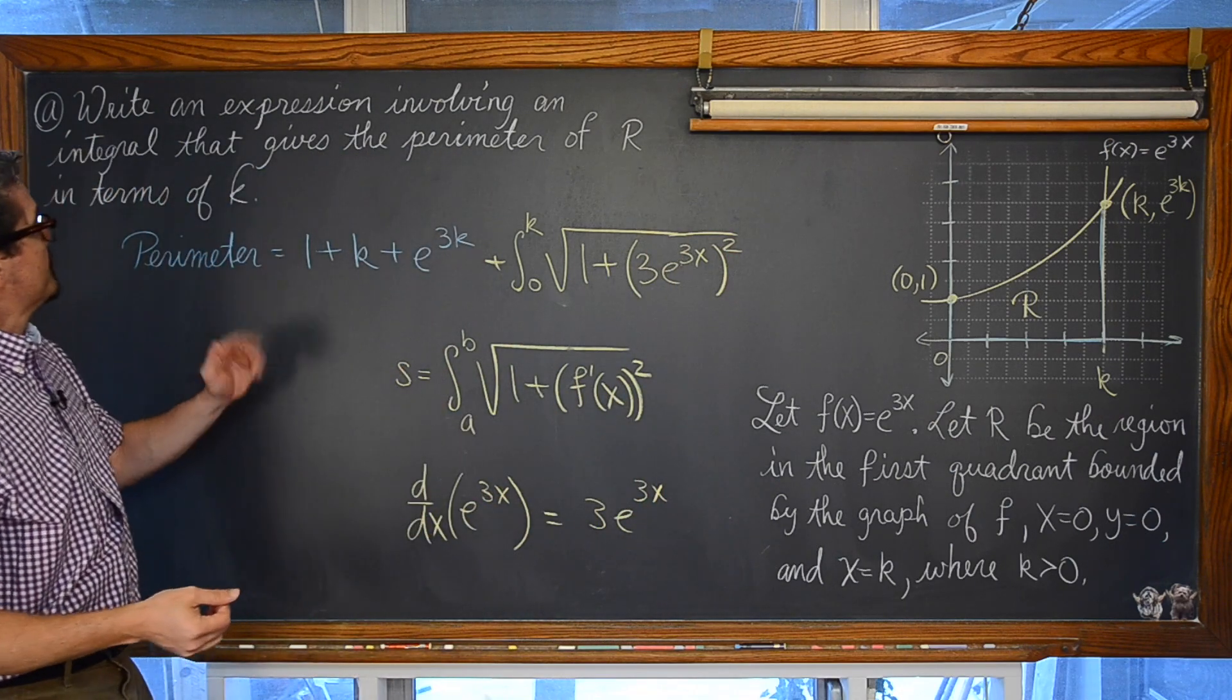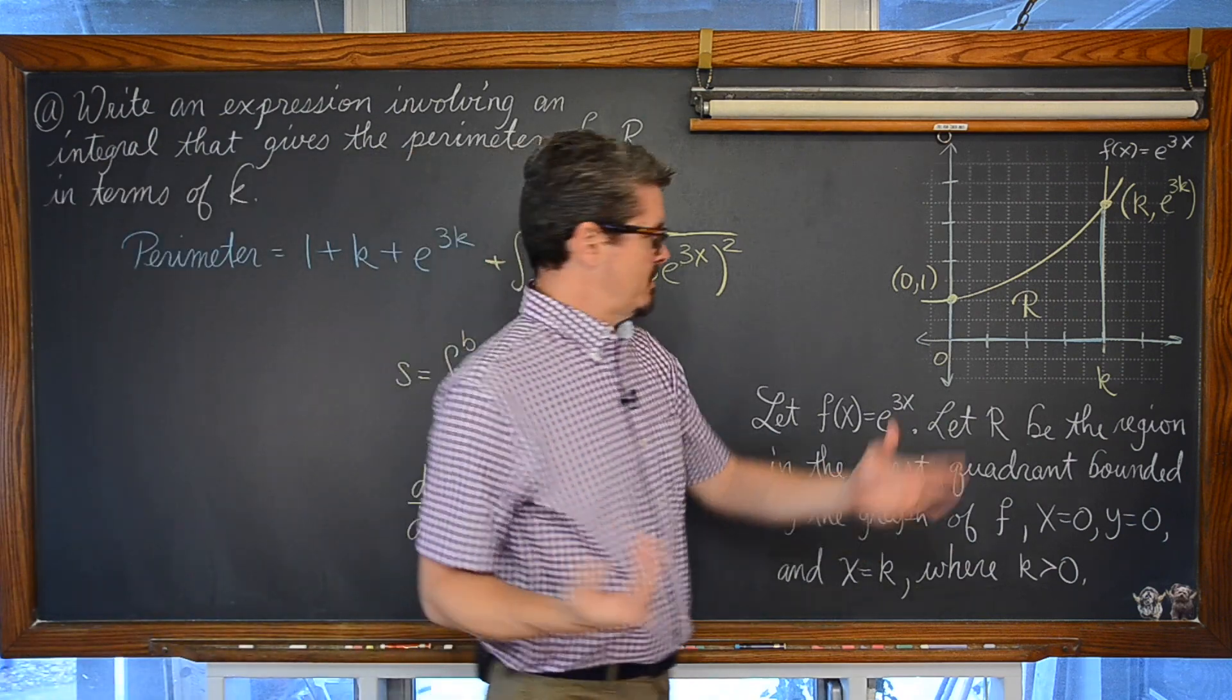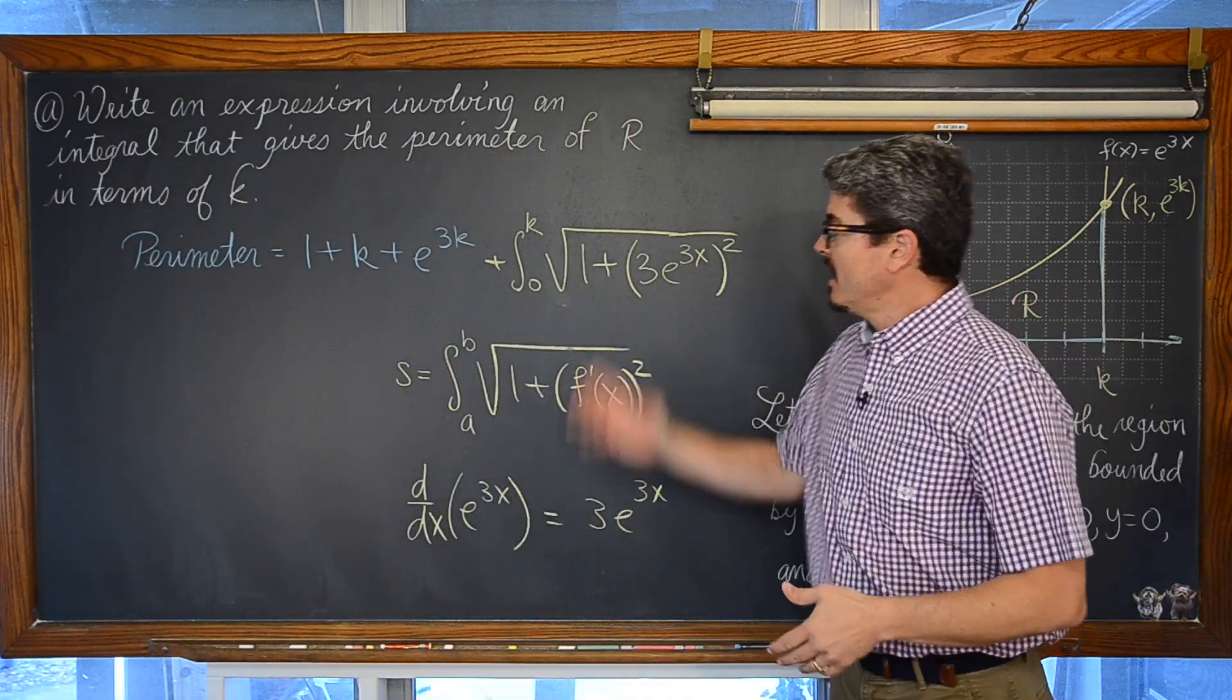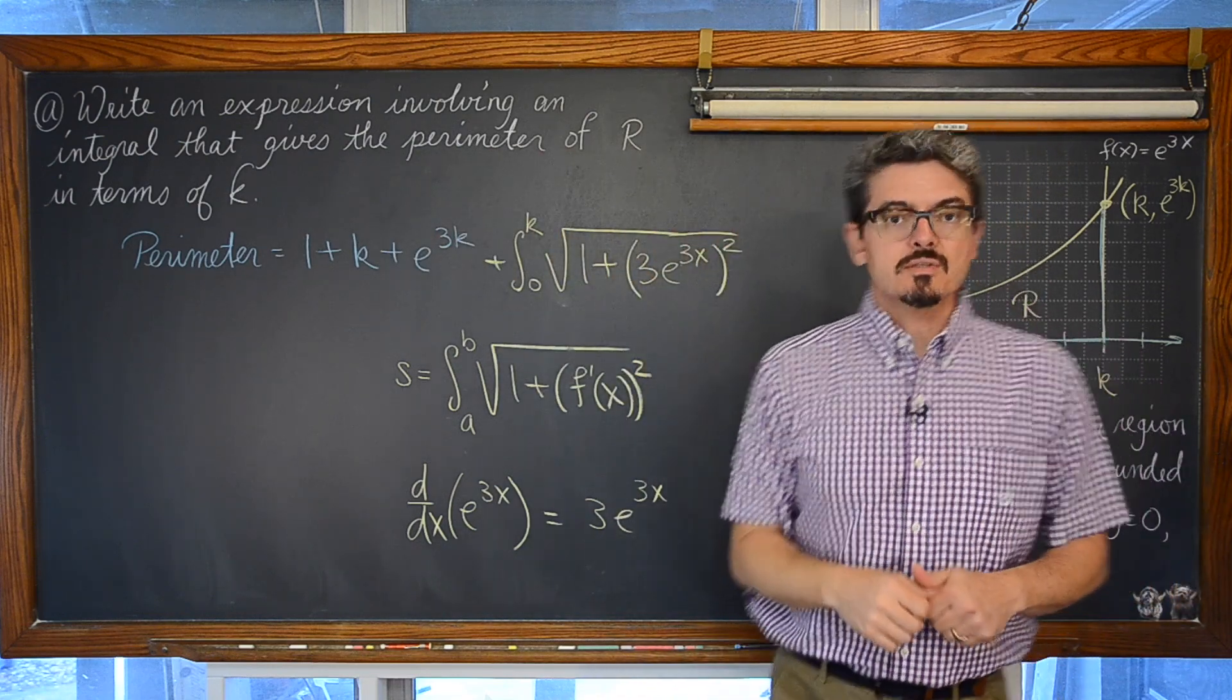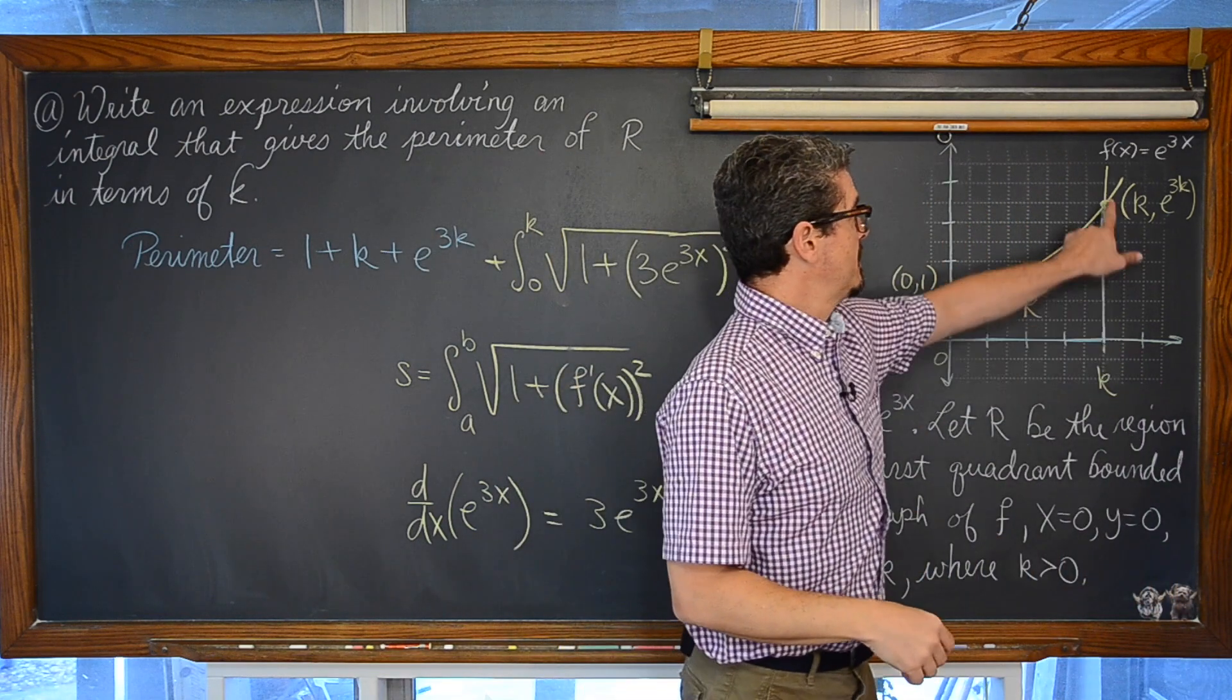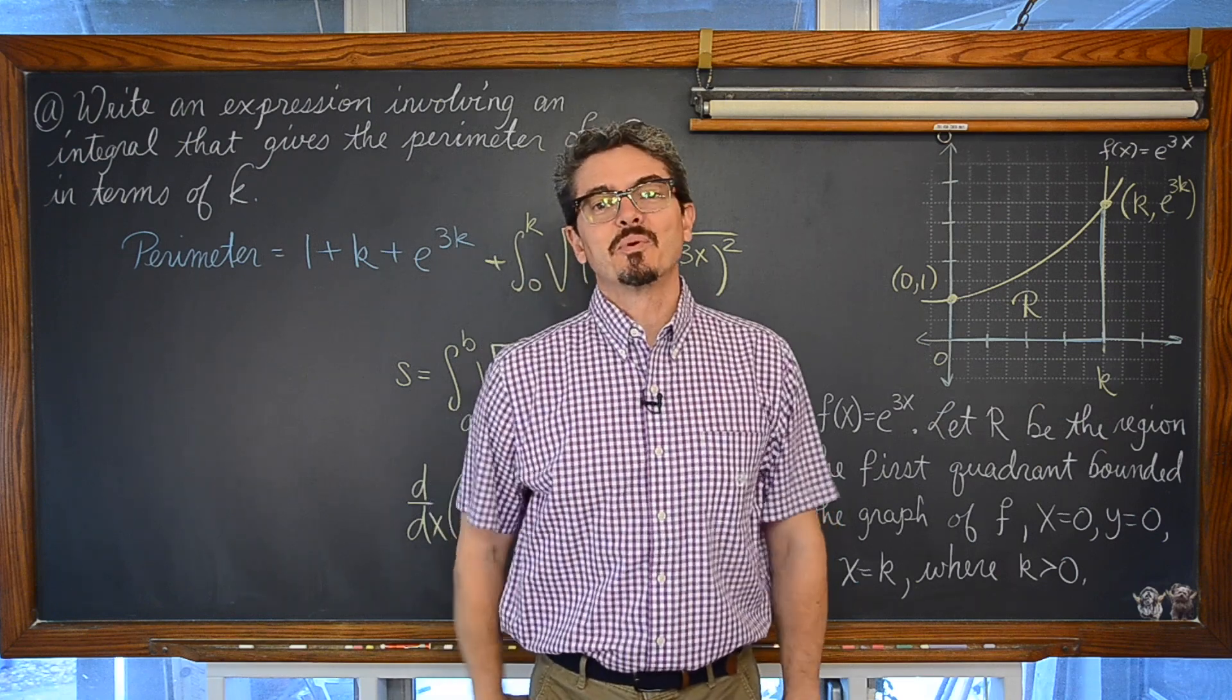Didn't ask us to evaluate this definite integral, because how could we? We don't even know what k is equal to. But there is an expression right there that will tell us the perimeter, the distance around this region R. Part 2 coming up right now.